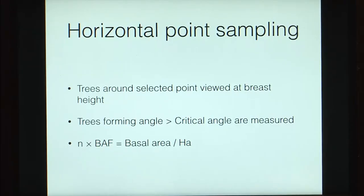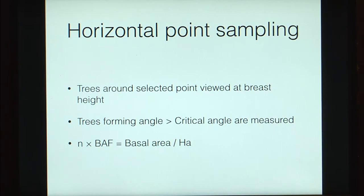In horizontal point sampling, we look at trees around the selected point viewed at breast height, which is our reference height. All trees forming an angle greater than the critical angle are counted, and the number of tallied trees multiplied by the basal area factor gives the basal area of the stand per hectare.